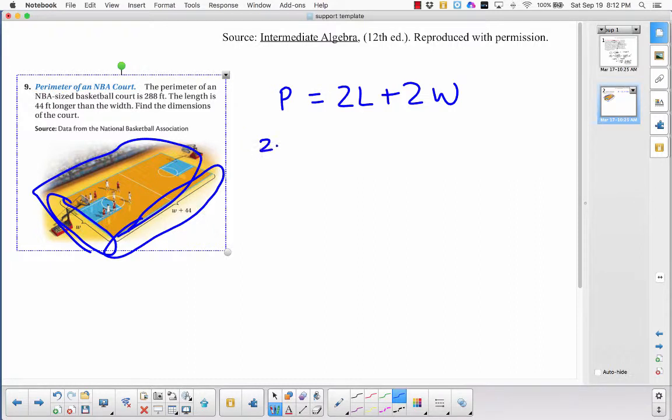They told me the perimeter is 288. Put that in there. And then they say the length is 44 longer than the width, so we call that W plus 44.